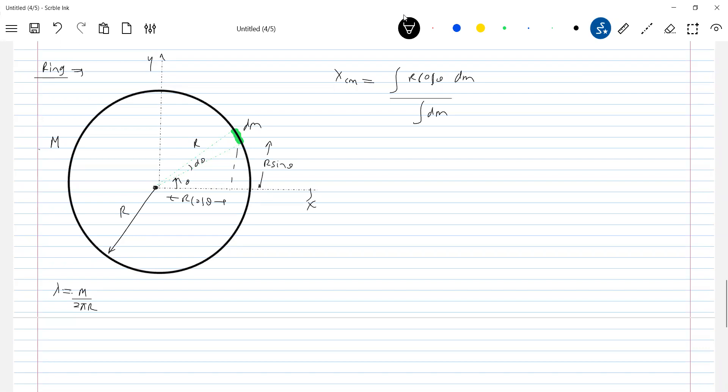Now slowly try to get into the numericals where you can save time. No need to calculate dm separately because m is the total mass of the ring. So integral of dm should be equal to m. So this should be equal to integral of R cos θ. What is dm? We will write it. So dm is what?